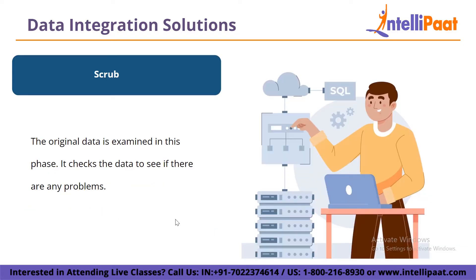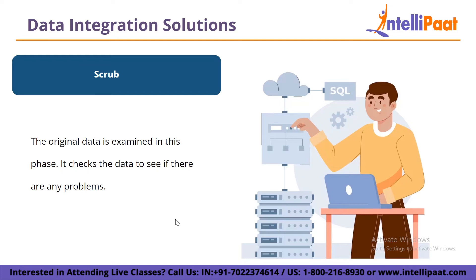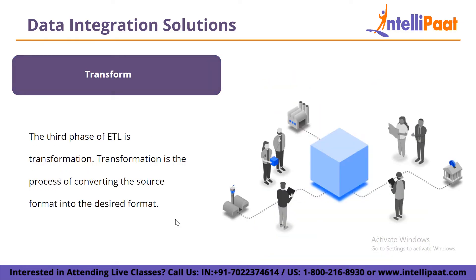Then we have scrub. In this phase, the original data is examined to check if there are any problems. It uses artificial intelligence and various approaches to detect data flaws or inconsistencies, and determines whether or not product quality standards are met. Then we have transform. Transformation is the process of converting the source format into the desired format — modeling or modifying data to meet the needs of the user. Changes can be made to the number of columns or rows.